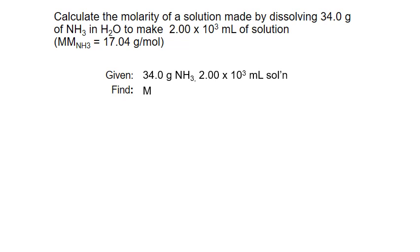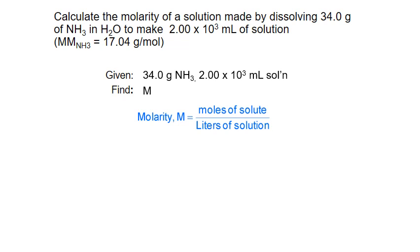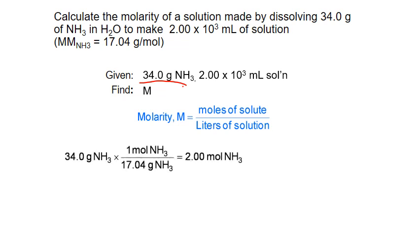We're asked to find the concentration in molarity, that's the capital M, and we know the formula for molarity is moles of solute per liter of solution. The units of what we're given don't match what we need for the formula, so we need to convert our grams of solute into moles. We can do this by dividing by the molar mass of that solute.